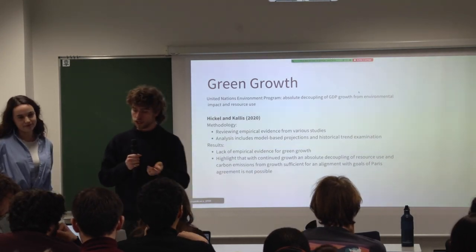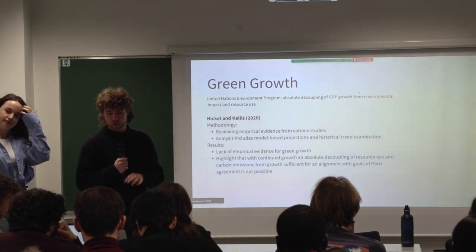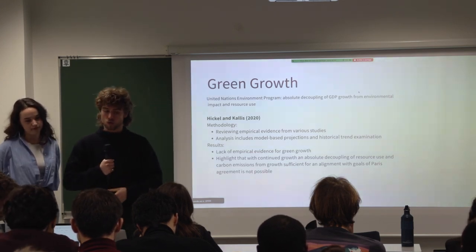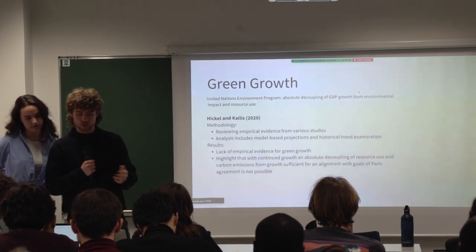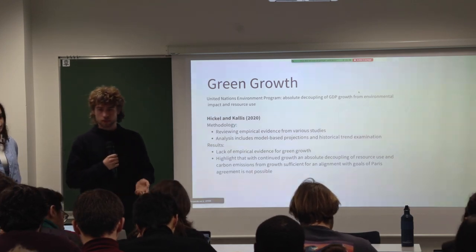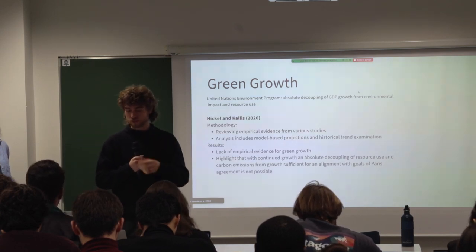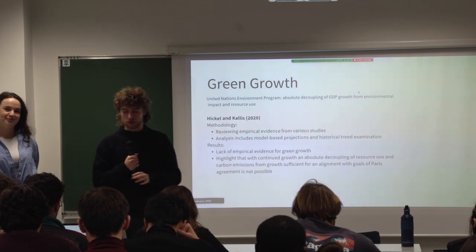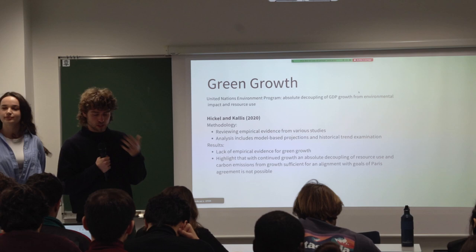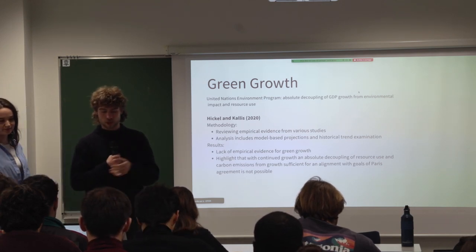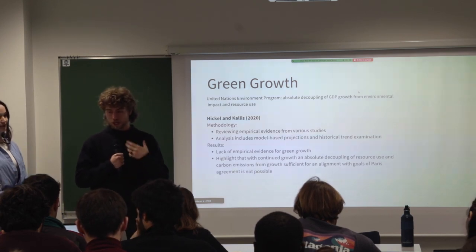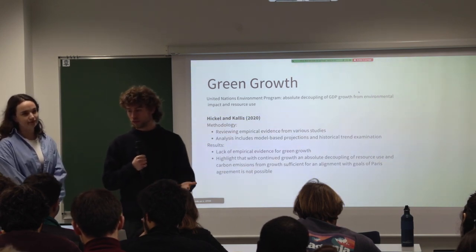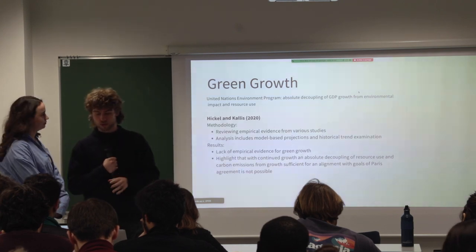We'll discuss the concept of green growth. According to the UN Environment Programme, green growth is about absolute decoupling of GDP growth from environmental impact and resource use — keeping growing while reducing absolute emissions and resource use. Hickel and Kallis, in their paper 'Is Green Growth Possible?', reviewed empirical evidence from model-based projections across different scenarios and came to the overwhelming conclusion that green growth is not possible and cannot be aligned with the Paris Agreement — neither the 1.5°C nor the 2°C goal.